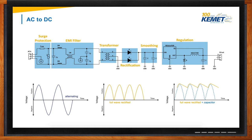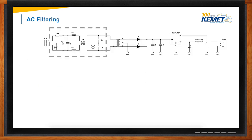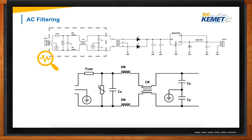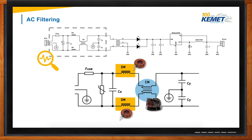To make it easier, let's break down the main sections of a power supply and talk about the details. The first stage is surge protection and AC line filtering. There are several different components that go into this, but the main one I want to focus on is the AC line filter. For AC line filters, we have differential mode and common mode filters. In addition to the filters, you can also use varistors for transient protection and safety capacitors.